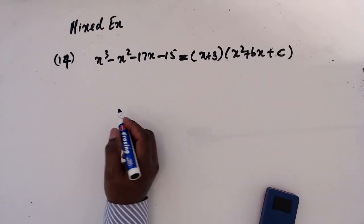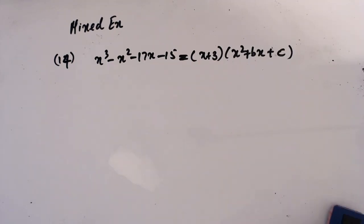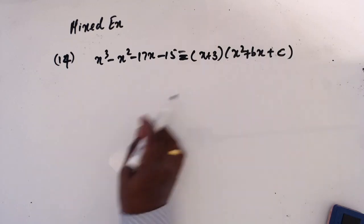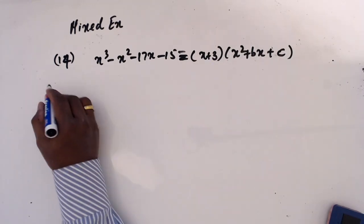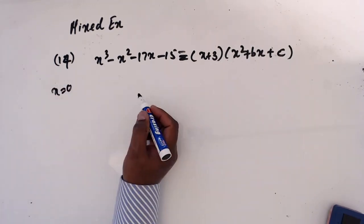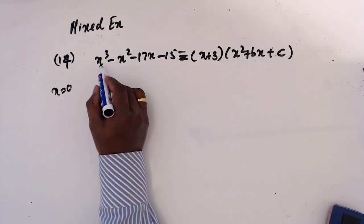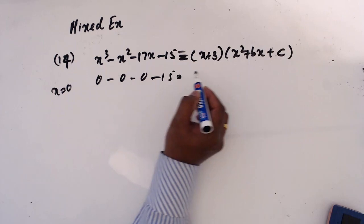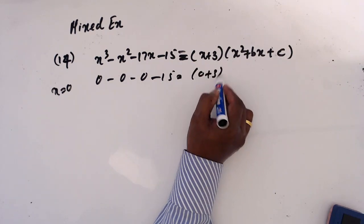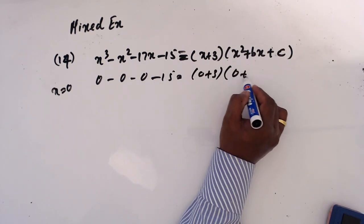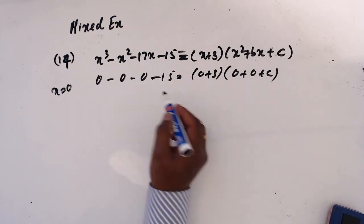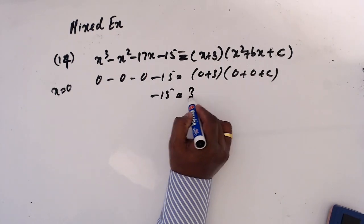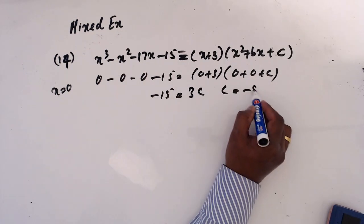Another technique: substitute x = 0 into both sides. Left becomes 0 + 0 + 0 + 3c and right becomes minus 15. So 3c = minus 15, giving c = minus 5.